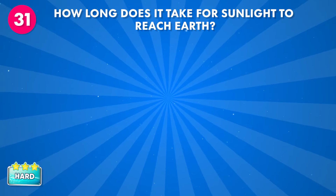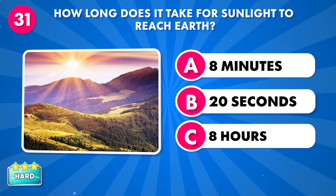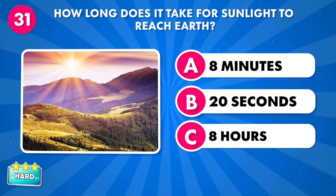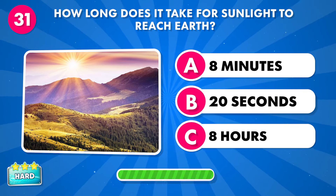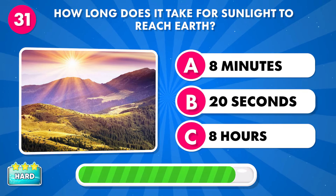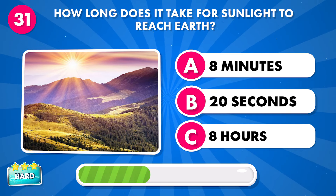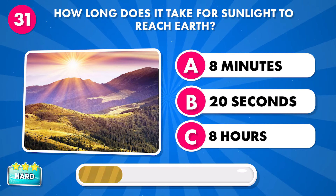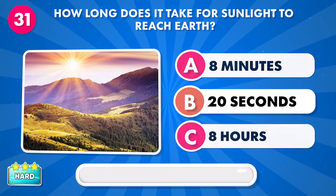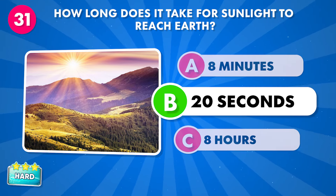How long does it take for sunlight to reach Earth? A: 8 minutes 20 seconds, B: 20 seconds, C: 8 hours. It's 20 seconds.